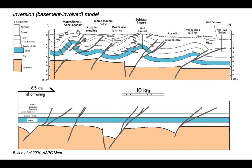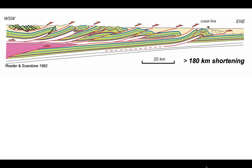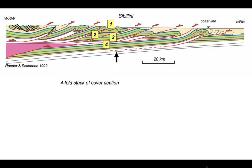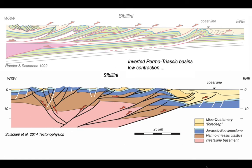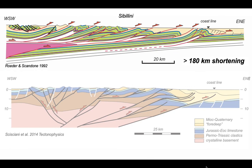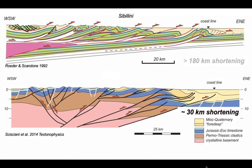Confronting the differences between these thin-skinned and inversion models: the thin-skinned model with its 180 kilometres of shortening shows the elevation of the Jurassic rocks at the Sibillini Mountains resulting from stacking up four thrust sheets — a four-fold stack of the cover succession. By contrast, a version of the cross-section by Scisciani et al. has the Sibillini Mountains lined up in the lower cross-section, where the Jurassic strata in blue are elevated not because of multiple repetitions but simply because of inverted Permo-Triassic basins at depth. The top cross-section shows 180 kilometres of shortening; Scisciani's cross-section shows somewhere in the region of 30 kilometres of shortening.